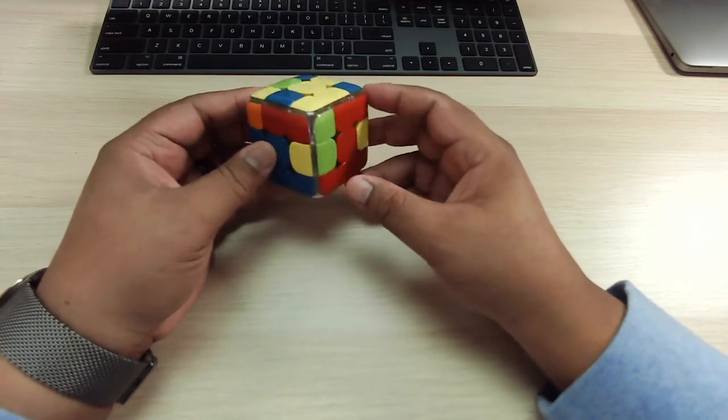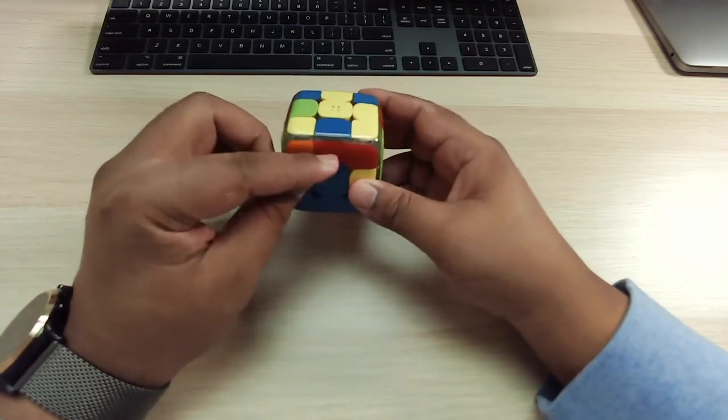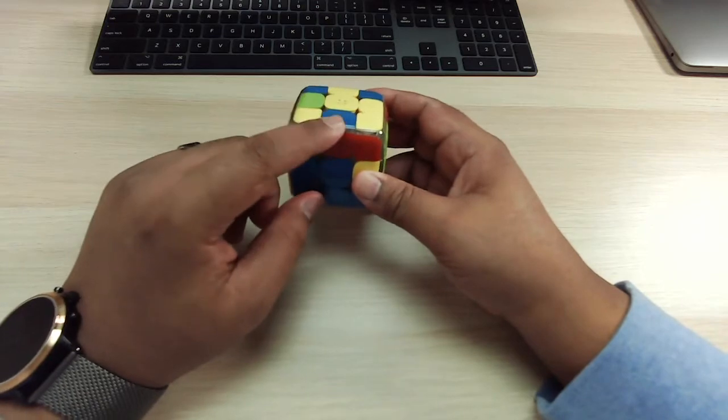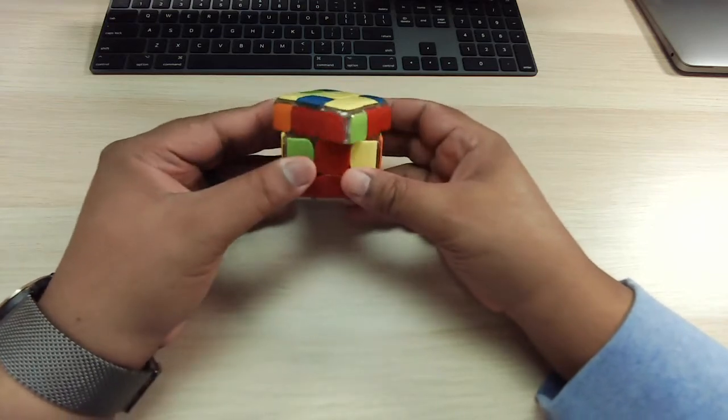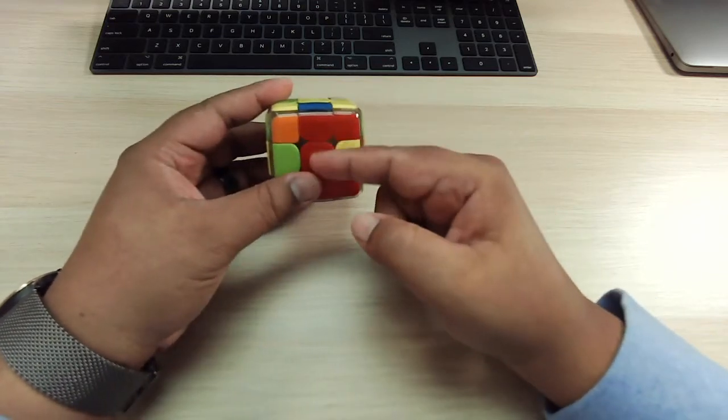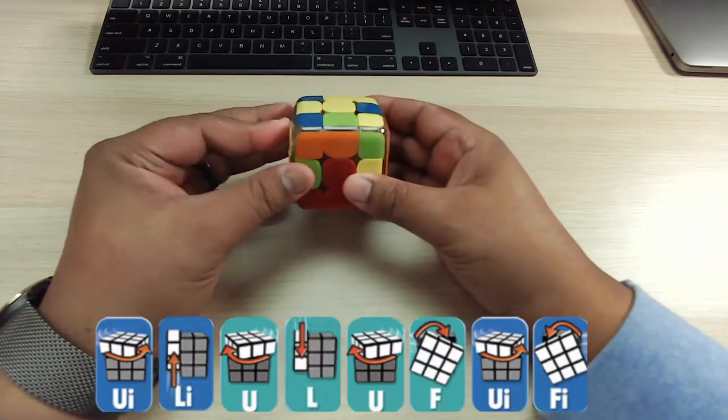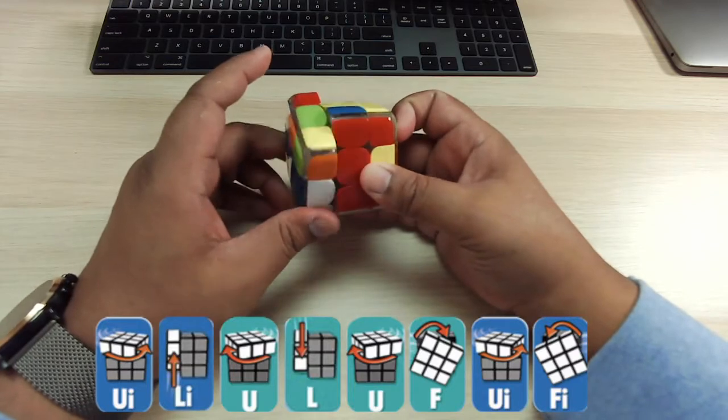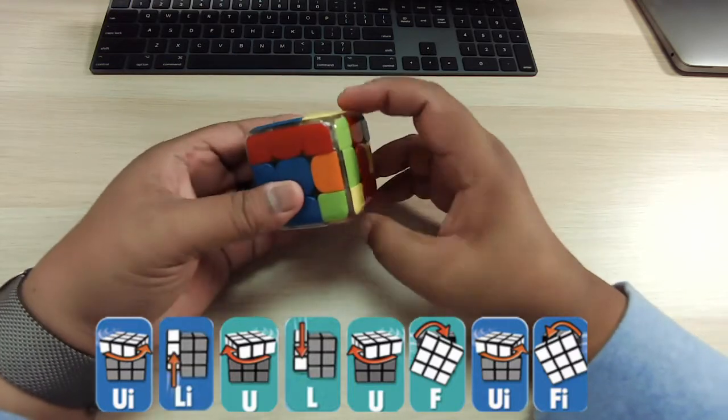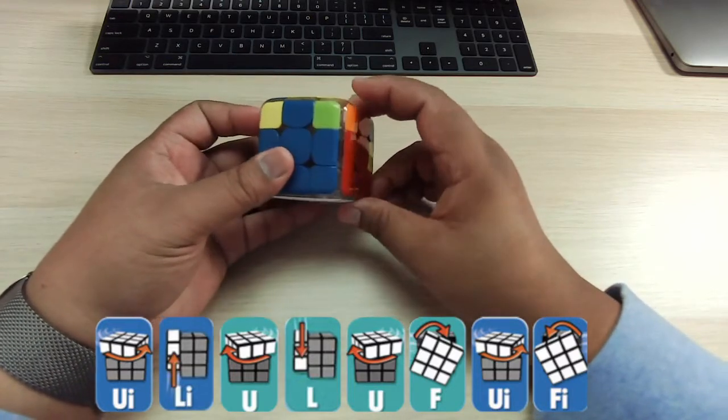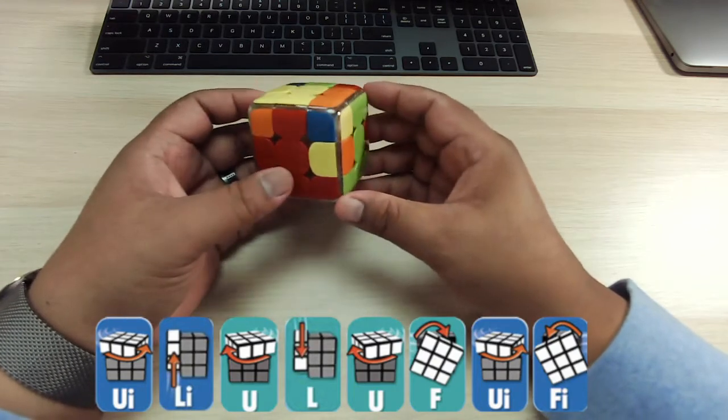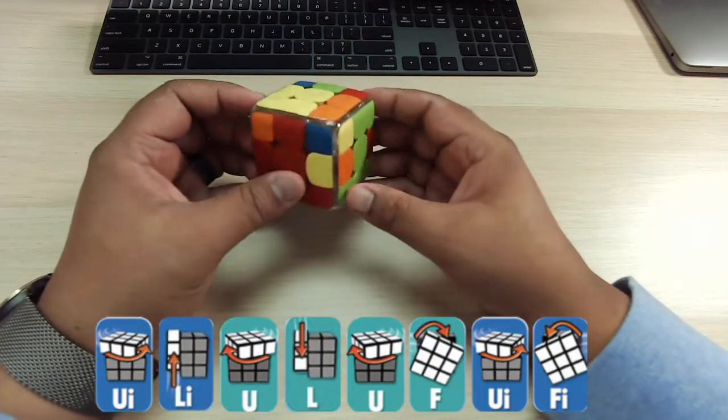Now, look around the cube, see what other edge pieces are available. Here's one right here. I know I need to move it over to the red, match it up with the red center. It's going to go over here, to the left. So I know I need to do that same algorithm that I just did. And I'm doing it slow here. When I do it, I typically do it a lot faster.